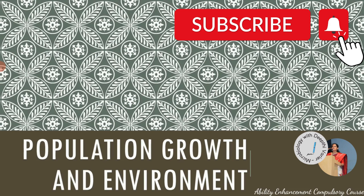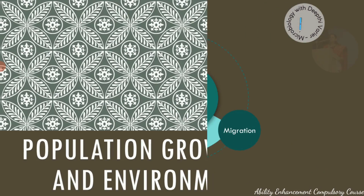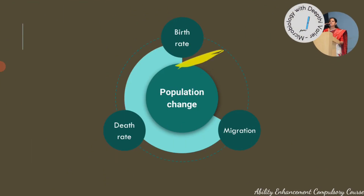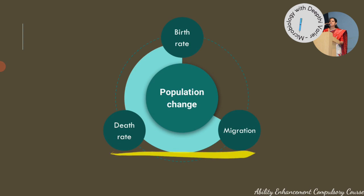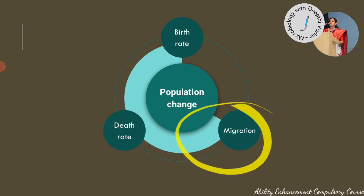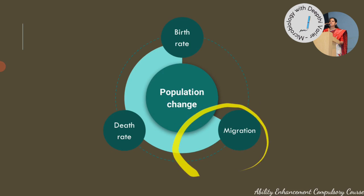Population growth, or population change, is based on three variables: the birth rate, the death rate, and when we talk about population change on a local level, it includes the migration rate as well.